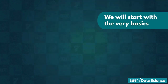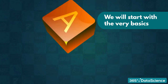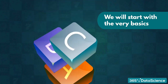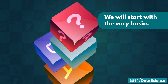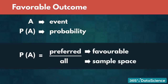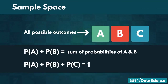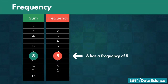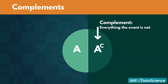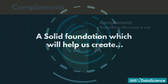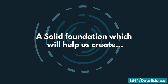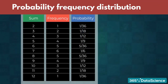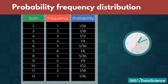First, we will start with the very basics. We will learn about the different types of distributions and the building blocks of probability theory: favorable outcomes, sample space, expected values, frequency, and complements. We will build a solid foundation, which will help us create our first probability frequency distribution. And that's just in the first hour.